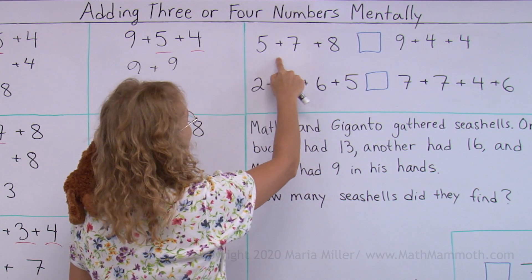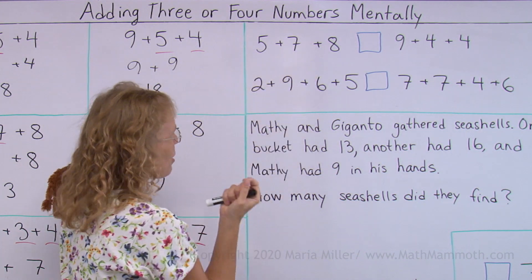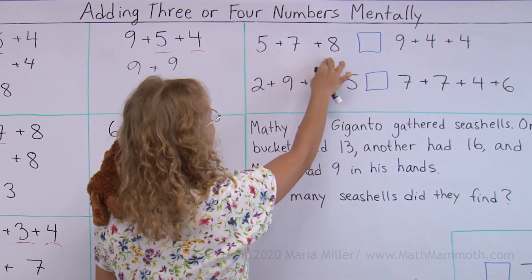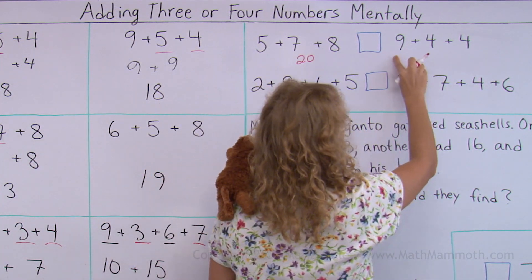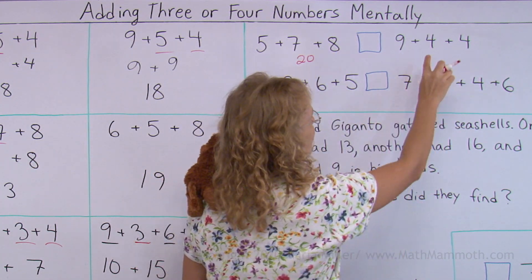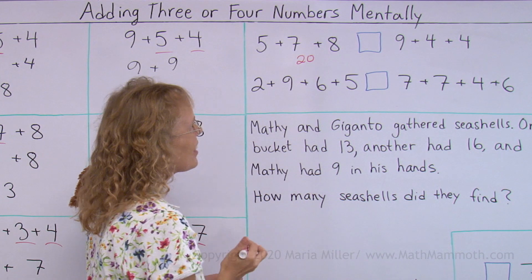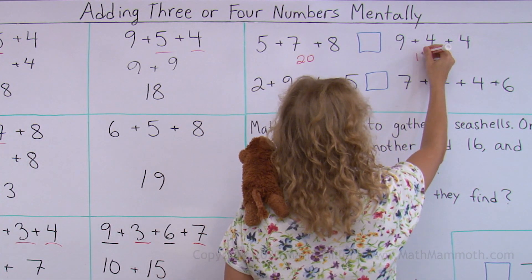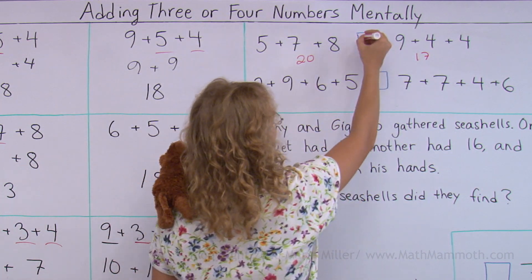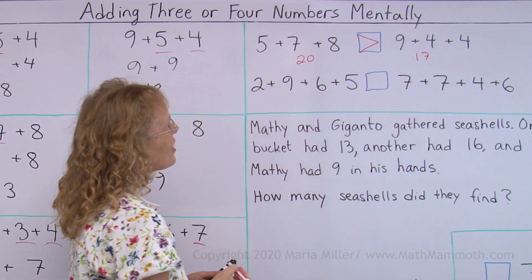Here we have 5 plus 7. That's 12. And then 12 plus 8 makes 20. On this side, 9 plus 4. Oh, hold on. Maybe I'll add 4 plus 4 first. That's 8. And 8 and 9 is one of our addition facts. 8 and 9 is 17. So now it's easy to see. 20 is, of course, greater than 17.